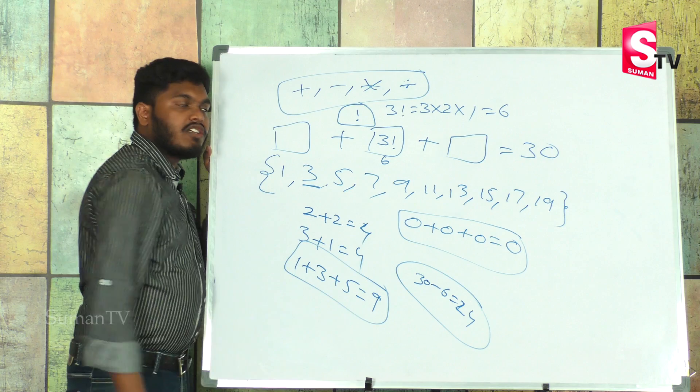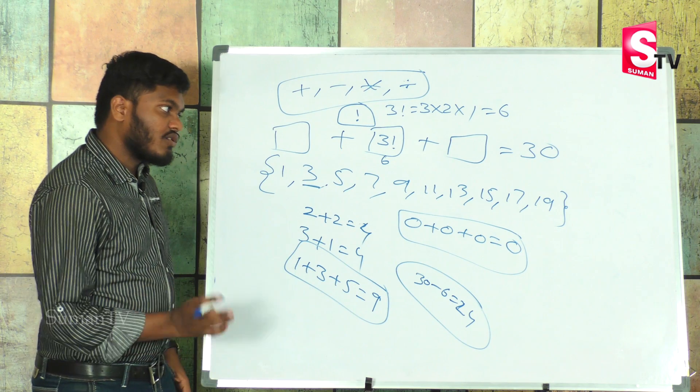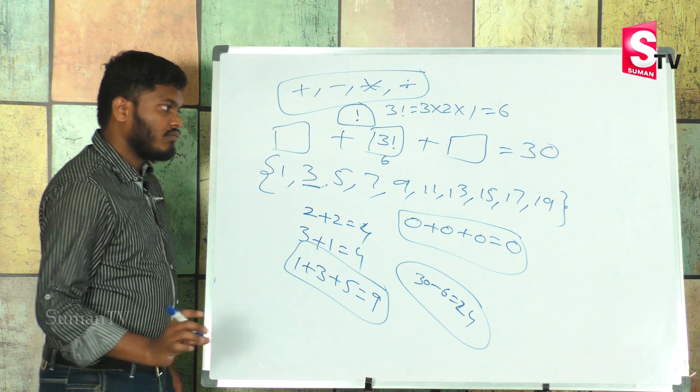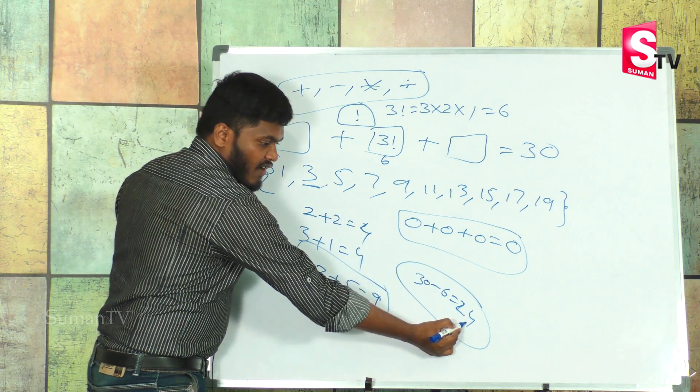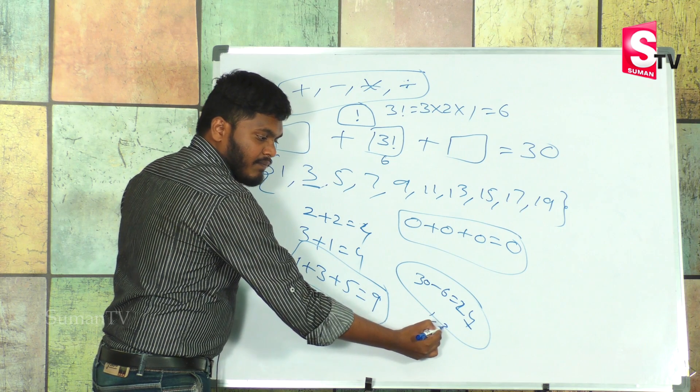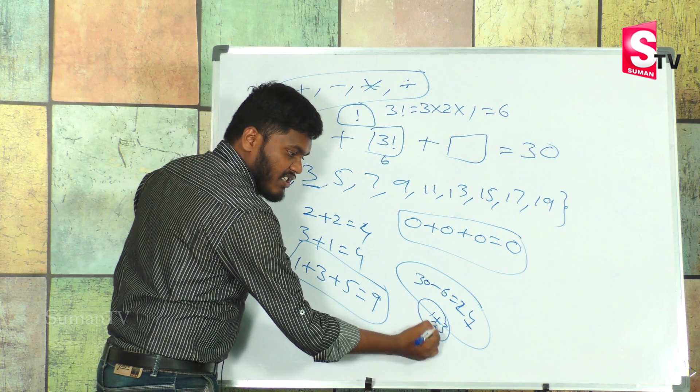We need two numbers that sum to 24. Using unit digits, 1 plus 3 equals 4. We can use 11 and 13. 11 plus 13 equals 24.